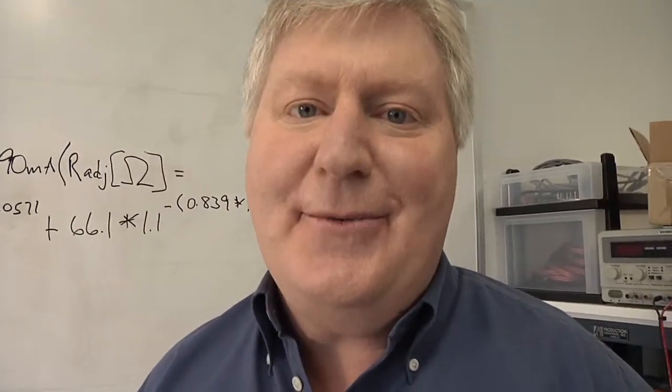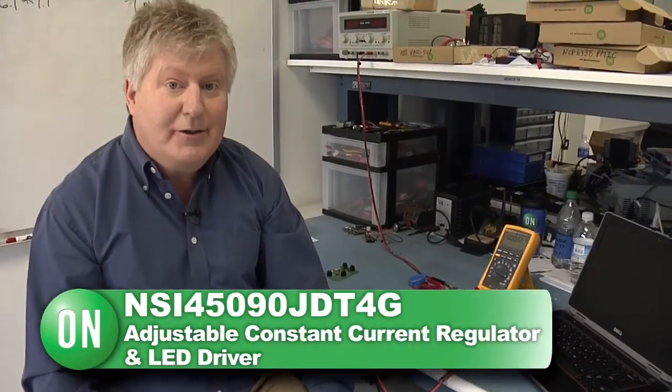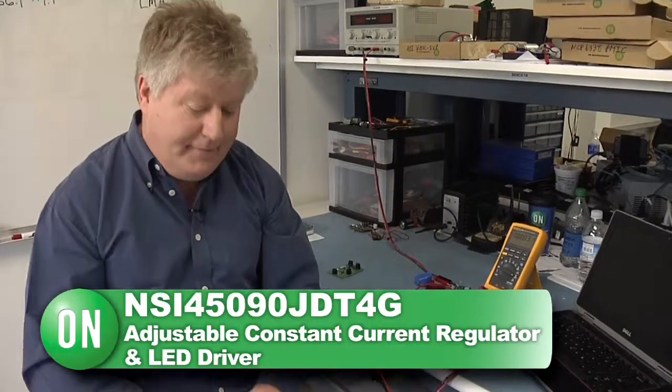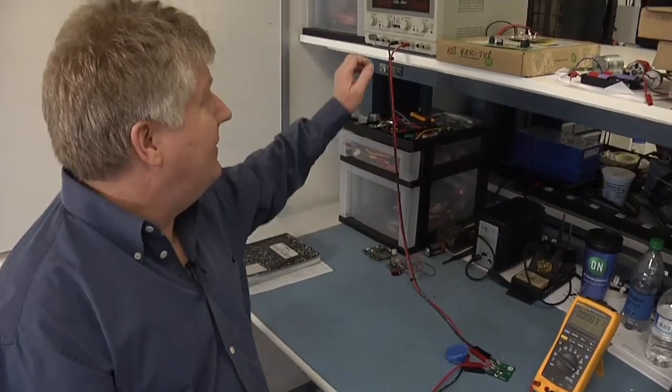Now here's the easy way. Grab the datasheet for this adjustable constant current regulator LED driver and turn to figure six. Use this chart to approximate your resistor values. Then get our CCRG EVB eval board. Connect it into your application and turn it on at your desired operating conditions.